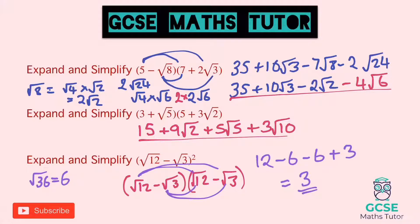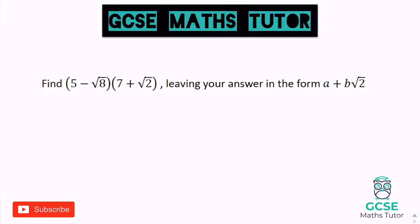Before we finish, I've got one last one for you to have a look at. Find (5 − √8)(7 + √2), leaving your answer in the form a + b√2. I quite like the way the question is written, because it gives us a little hint that it's all going to simplify down to a root 2 at the end. So let's have a look.